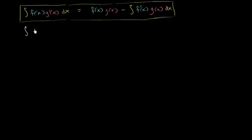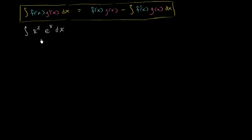Let's see if we can take the antiderivative of x squared times e to the x dx. The key is to recognize when you can attempt to use integration by parts. The clue that integration by parts may be applicable is that we have a function that's the product of two other functions — x squared and e to the x. Integration by parts is useful if I can take the derivative of one and it becomes simpler, and if I take the antiderivative of the other, it becomes no more complicated.